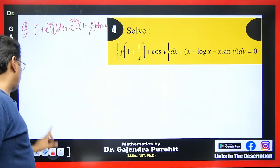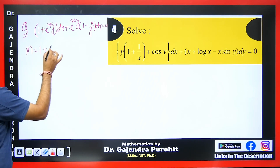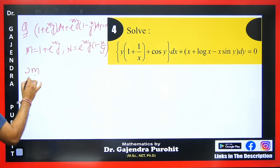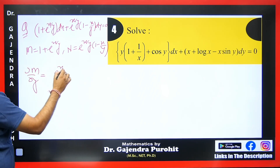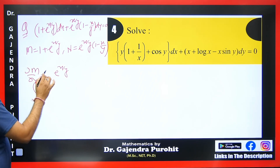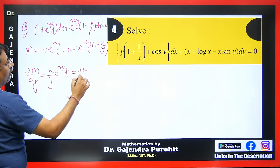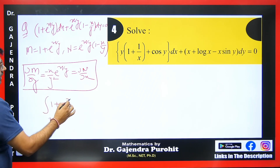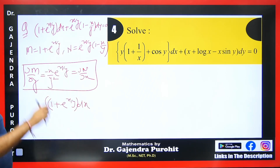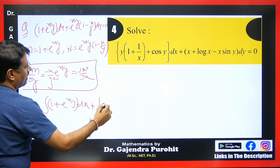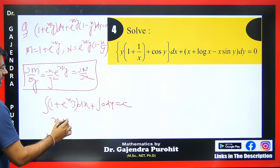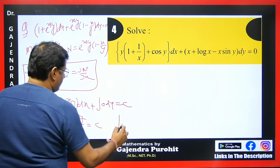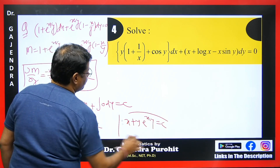This next question uses a homogeneous form. M = 1 + eˣ/ʸ and N = eˣ/ʸ(1 − x/y). Del M by del y = eˣ/ʸ·(−x/y²) and del N by del x gives the same value — both equal, so the equation is exact. Integrating M with respect to x gives x + y·eˣ/ʸ = c.